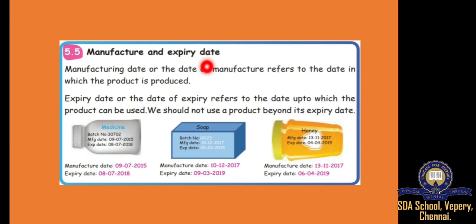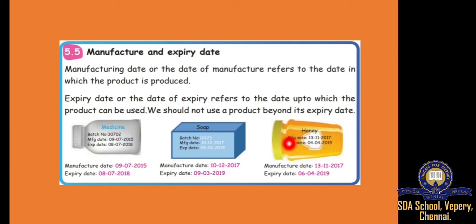What is expiry date? Expiry date means the date until which we can use the soap. After that, we should not use any product. We should never use beyond the expiry date. For example, see this honey bottle — the manufacture date. MFG means manufacture. When this honey was made was 13-11-2017.